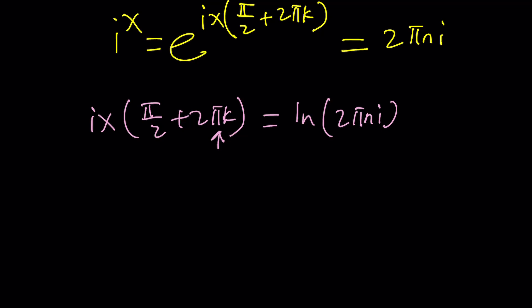We're going to get ix times pi over 2 plus 2 pi k. If you don't want to deal with this, you can just set k equal to 0, be done with it. And then ln 2 pi n i. Great. Remember, we're solving for x. We don't really care about this, except we kind of have to figure out the ln of i one more time, right?